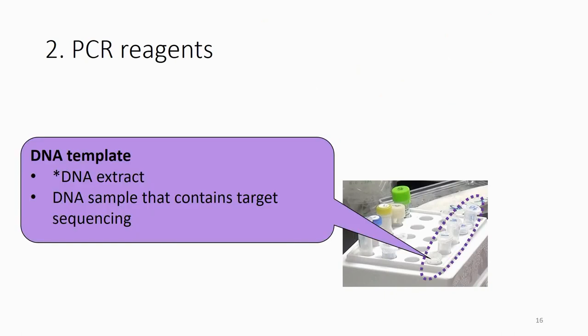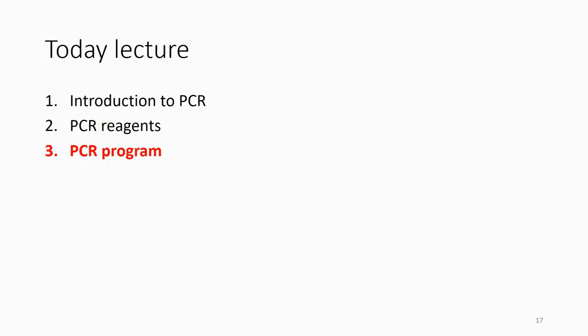The last thing is, after you have the six ingredients, you also need to put your template, the DNA template. So what you need to do, let's say if you extract DNA from three different samples, three different tissues, after you extract DNA, then you have three extractions.